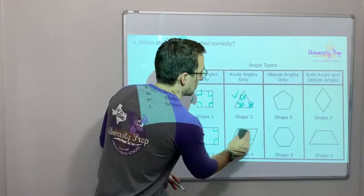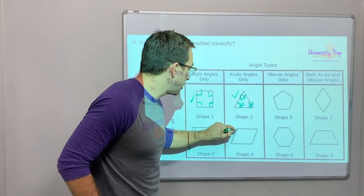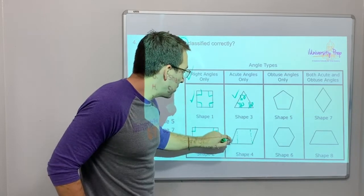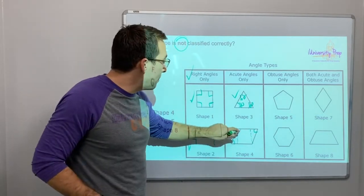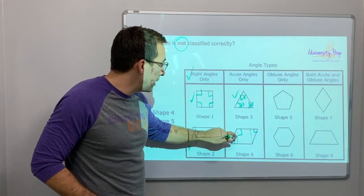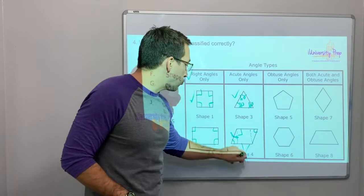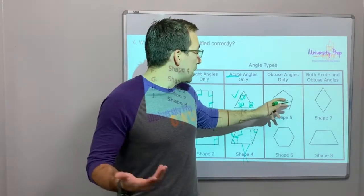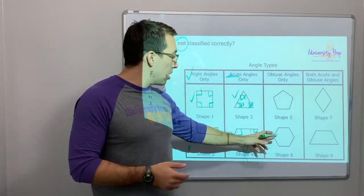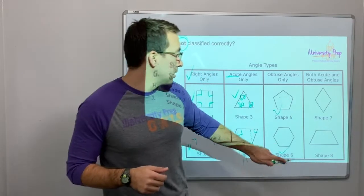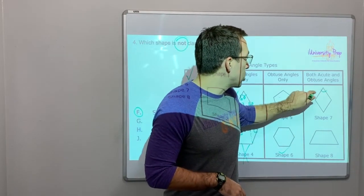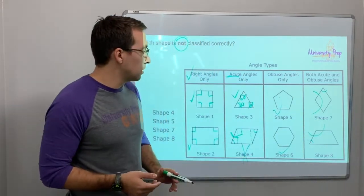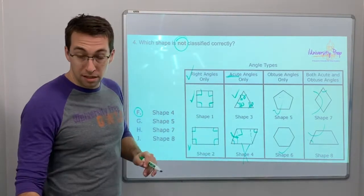Shape four — if we draw 90 degrees, this angle is acute and this angle is acute, but these other angles are big. This is 90 degrees to here and then you have the extra bit, so shape four is wrong — it's not acute angles only. The pentagon in the obtuse-only category — those are all obtuse, that's good. Shape six has both acute and obtuse angles, which is correct. So shape four is incorrect.